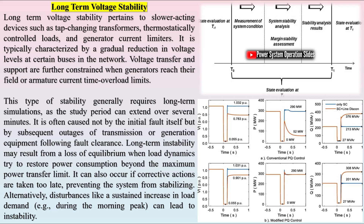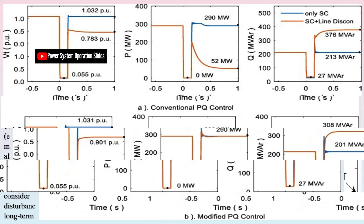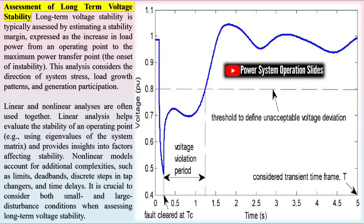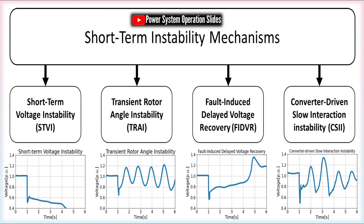The definition of power system stability aims to provide a clear, practical framework for understanding and applying stability concepts in power systems. It offers a physically grounded perspective that aligns with system theory while remaining accessible to engineering practitioners. Despite the transformation in power systems driven by the integration of CIG and power electronics-based control devices, this definition continues to hold relevance and remains unchanged. Power system stability refers to the ability of an electric power system, under given initial conditions, to return to a balanced operating state after experiencing a disturbance.